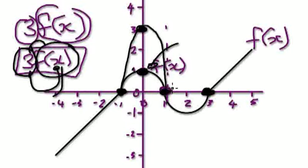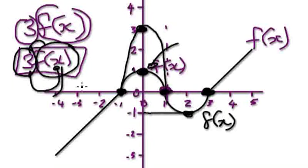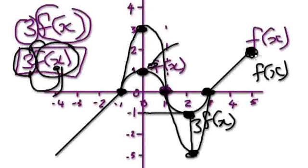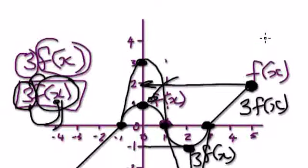So your new graph will probably look something like this — it will get stretched upwards. And then the old function f of x here is minus 1, but because you want to investigate 3f of x, at the moment it's negative 1, and then it gets dragged down. So this is your new point. I'll just select any point here. At the moment, let's select this point here where f of x is 2. Now because you want to investigate 3f of x, it's going to be 6.